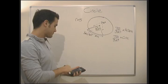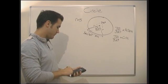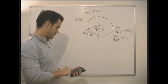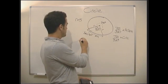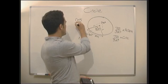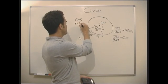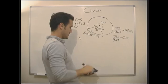Which gave us an area of 78.5, so A equals 78.5, and the circumference equals 31.4.